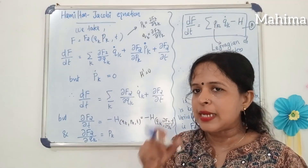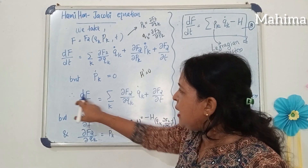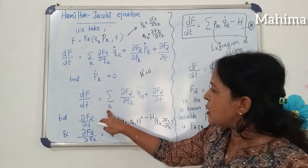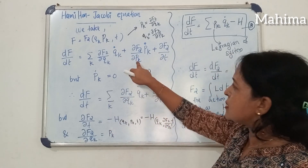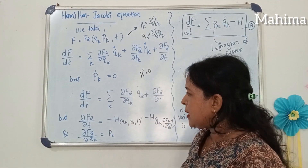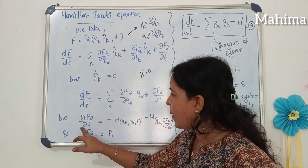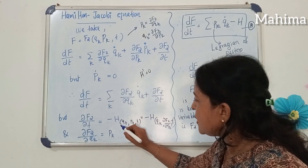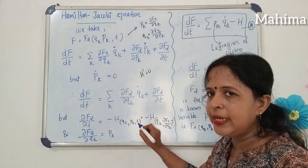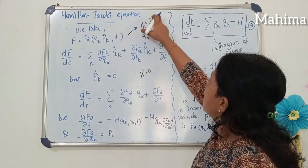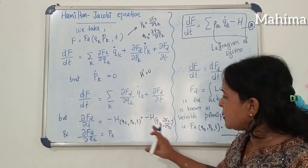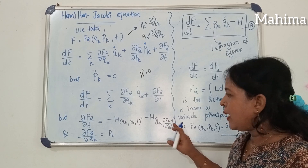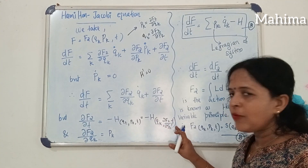We can write this as: del F2 by del qk times qk dot, plus del F2 by del Pk times Pk dot, plus the partial differentiation with respect to time. We know that Pk dot is equal to zero because the new Hamiltonian function is equal to zero, and Pk is a constant, that constant is beta k. So del F2 by del t equals minus H, which is a function of qk, del F2 by del qk, and t. That means minus H of (qk, del F2 by del qk, t).